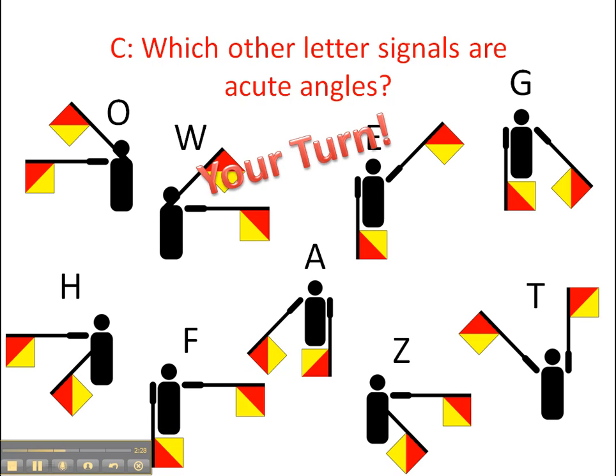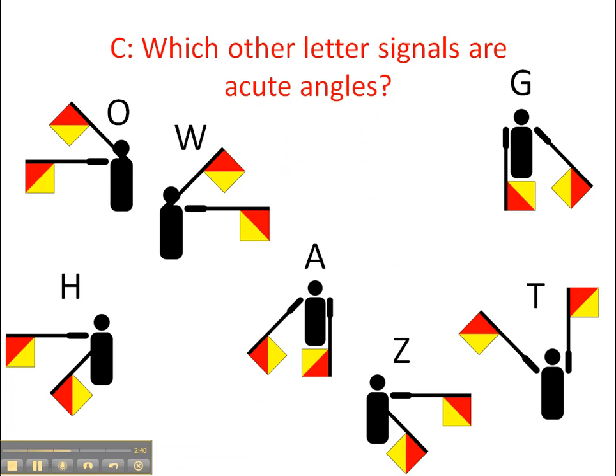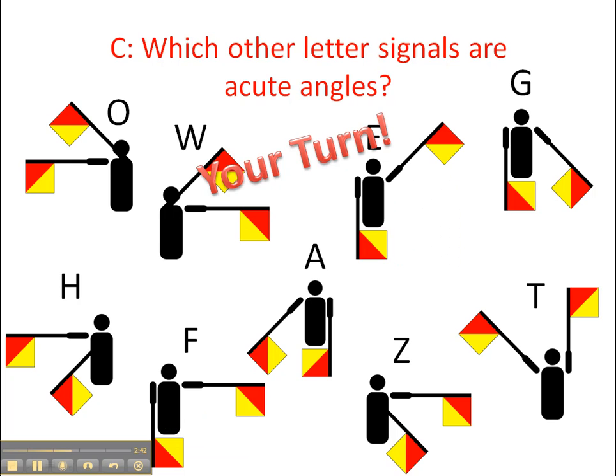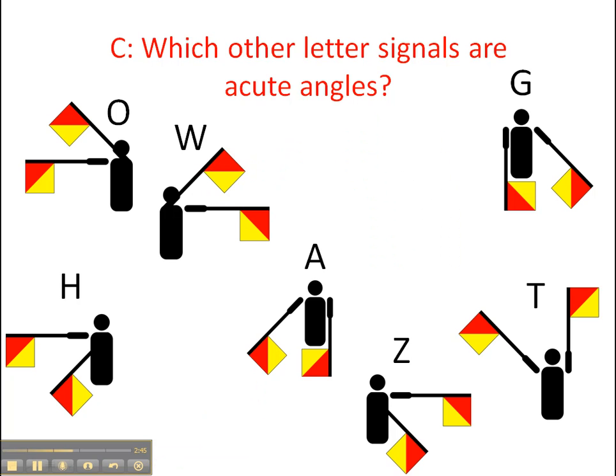So remember, an acute angle is less than 90 degrees. Which two angles in here are not acute? Pause the presentation if you have to and take a look. All right, if you were looking carefully you would have noticed that the F and the E are not acute. All these other ones are because they're less than 90 degrees.